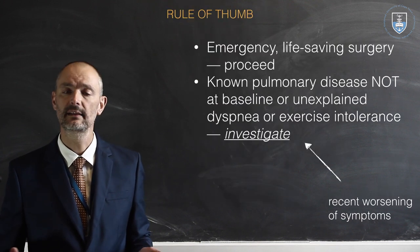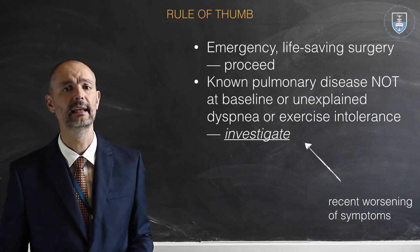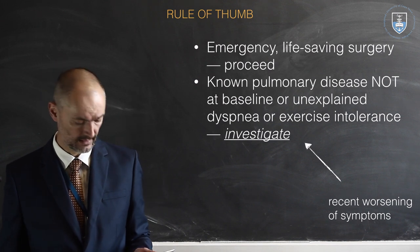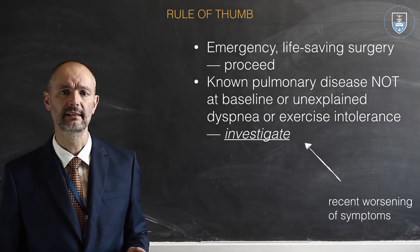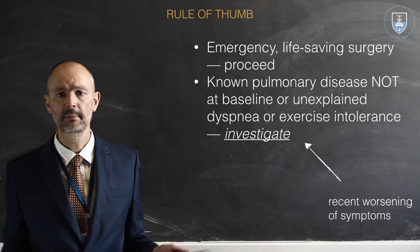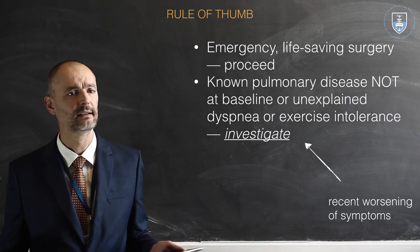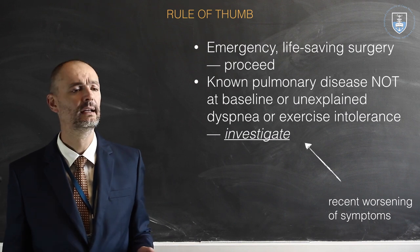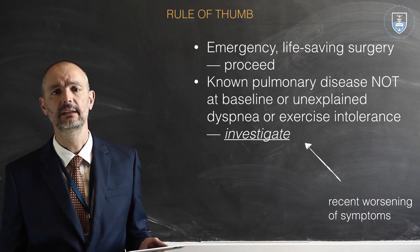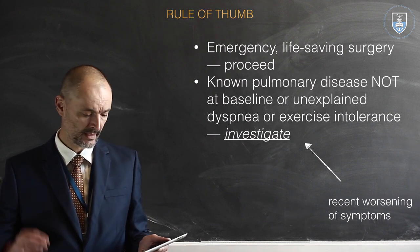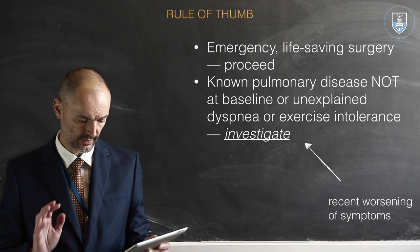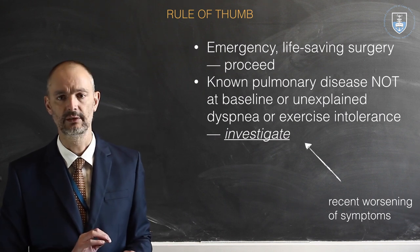Here's a rule of thumb — it's not an algorithm. First, if the surgery is of an emergency and life-saving nature, you have to go ahead; there's no need to waste time with tests. But if a patient has known pulmonary disease and is at their baseline — for example, an asthma patient whose symptoms haven't changed, not coughing more, no new dyspnea — there's no need for pre-operative investigation. However, if they're not at baseline, or have unexplained dyspnea or exercise intolerance, you need to investigate.